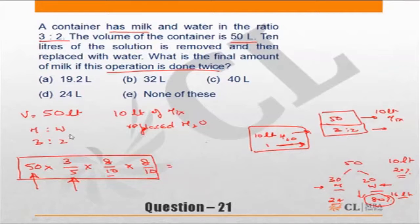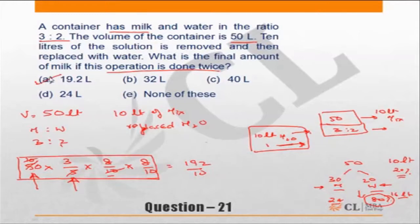Calculating: 50 × (3/5) × (8/10) × (8/10) = 50 × 3/5 × 64/100 = 19.2 liters. So 19.2 liters is the final amount of milk in the mixture. If the question had asked for the final amount of water, since the volume of the vessel is 50 liters and 19.2 liters is milk, the remaining 30.8 liters would be water.